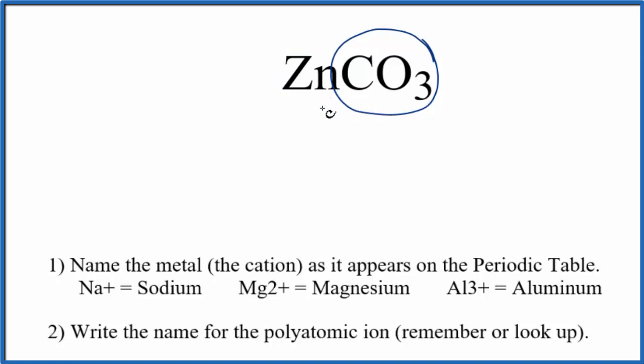So to write the name for ZnCO3, first we write the name of the metal. That's zinc. Next, we need to either have memorized that CO3 is the carbonate ion, and it has a 2 minus ionic charge.